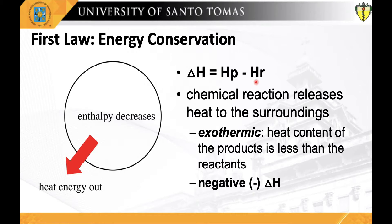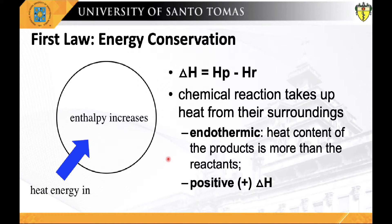When a chemical reaction releases heat, it is said to be exothermic. The heat content of the products is less than that of the reactants, and thus delta H has a negative value. On the other hand, when reacting systems take up heat from their surroundings, these reactions are considered endothermic and have positive values of delta H. This means the heat content of the products is more than the heat content of the reactants.